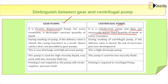Regarding safety: during working of the gear pump, if the delivery valve is closed, the casing may burst as a result. Hence, safety valves are provided in the gear pump. Because it always delivers a fixed quantity, a blockage can cause excessive pressure and the casing may burst. That is why a safety valve is essential.